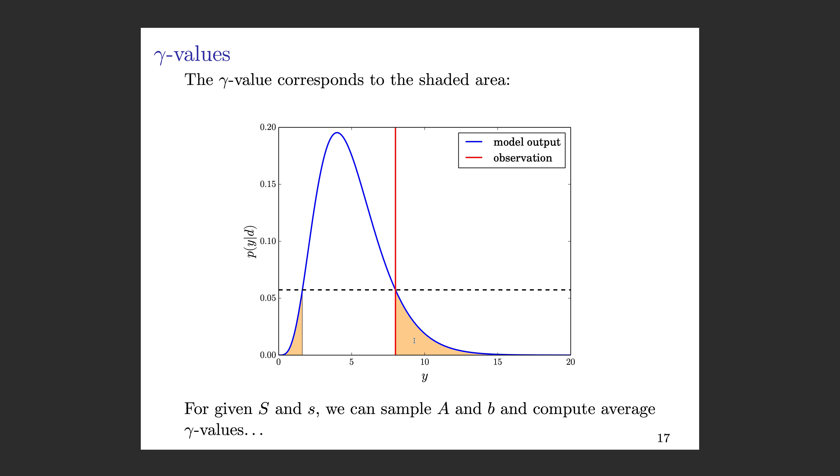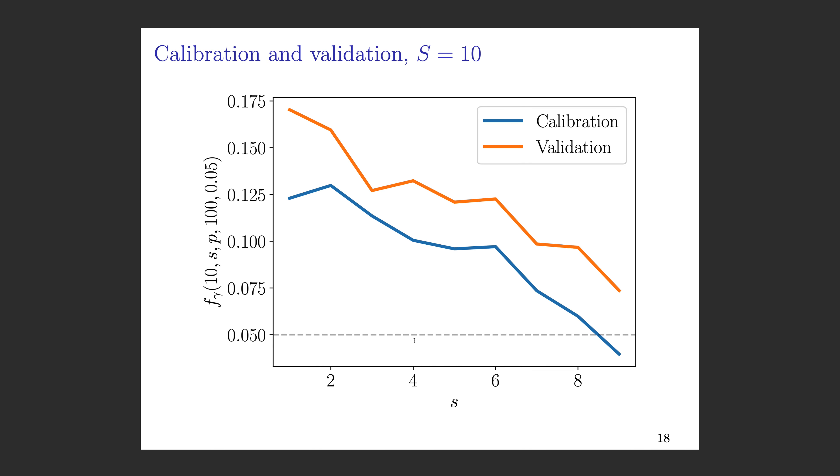Now this is just for one data point. For any given detailed and reduced model pair, we can sample a bunch of different random matrices to make up a detailed and a reduced model, and then we can compute all of these gamma values for every different data point. There's a lot going on in this plot. This is a plot showing gamma values when our detailed model has 10 species. Along the x-axis, we have little s, which corresponds to the number of species included in the reduced model. Then f sub gamma on the y-axis is the fraction of gamma values that are below a given threshold, in this case 0.05. P corresponds to whether the data is calibration or validation data. 100 means this is sampled over 100 different random matrices—100 different detailed and reduced model pairs.